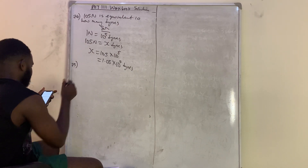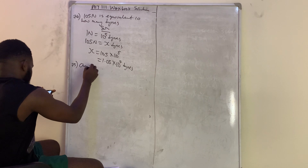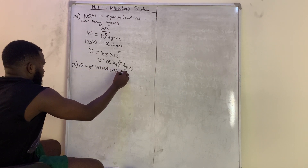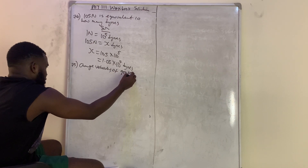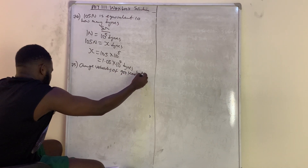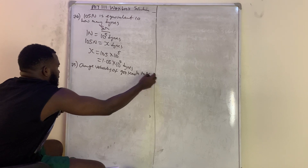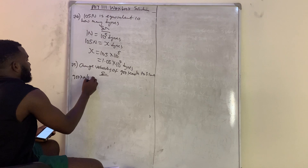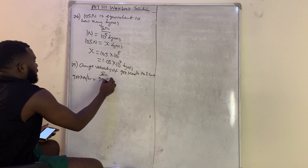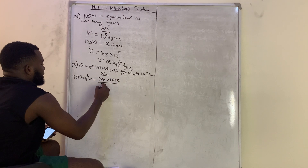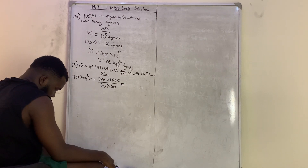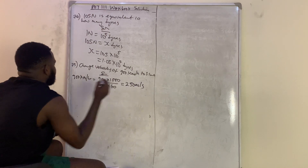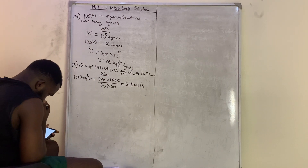Question 75 asks us to change a velocity of 900 kilometers per hour to SI units. The solution is 900 times 1000 divided by 60 times 60, which gives 250 meters per second.